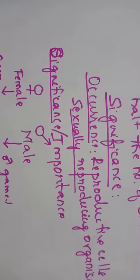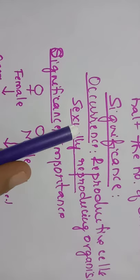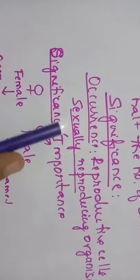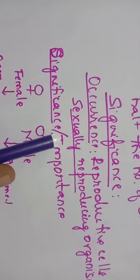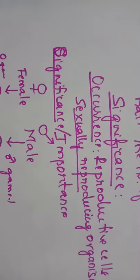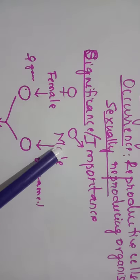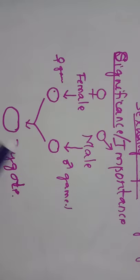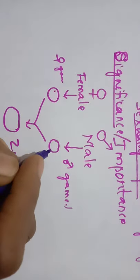Meiosis is very significant because it occurs in sexually reproducing cells. It is very important because if meiosis is not there, sexual reproduction doesn't happen properly. In sexual reproduction, male and female sexes are present. The male sex produces the male gamete and the female sex produces the female gamete, and when they unite together they form the zygote.